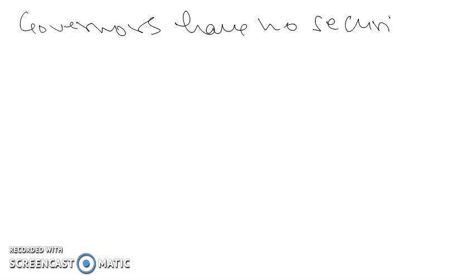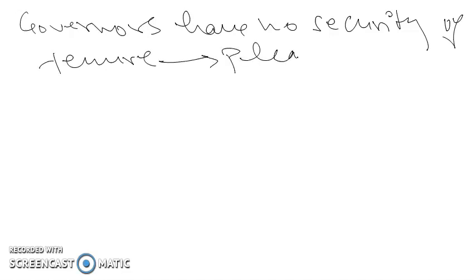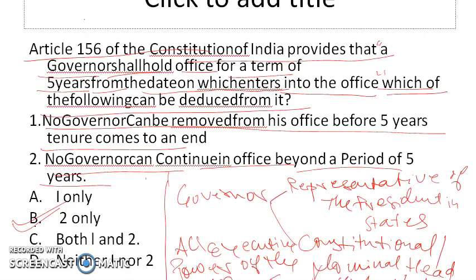The Governor has no security of tenure. Though they are appointed for five years, they hold office during the pleasure of the President and are agents of the center in the state. Therefore, Statement 2 only is correct — that no Governor can continue in office beyond a period of five years, unless reappointed by the President.